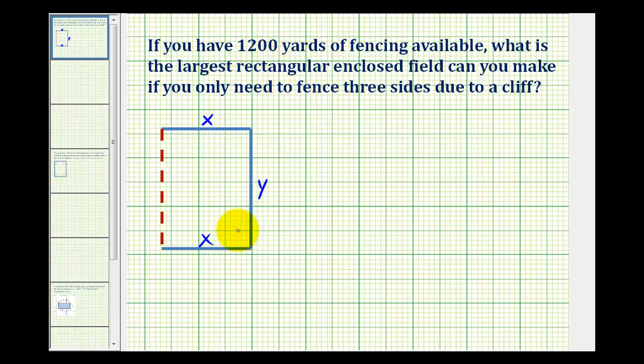So based upon how we labeled this diagram, our constraint would be that x plus y plus x must equal 1,200 yards, or we can say 2x plus y must equal 1,200.